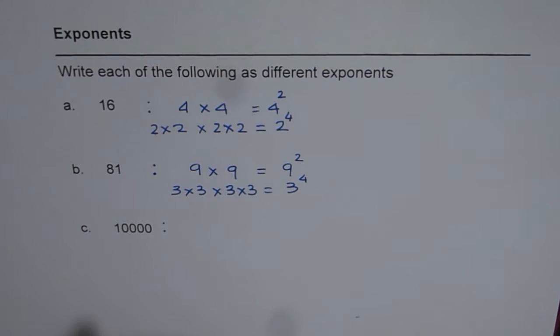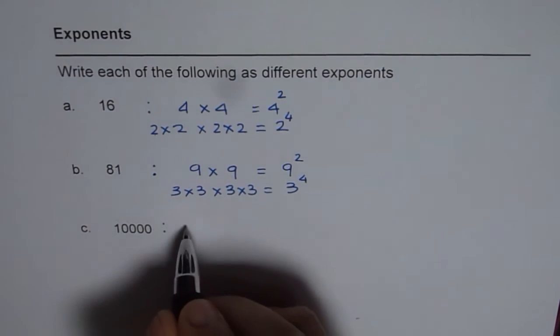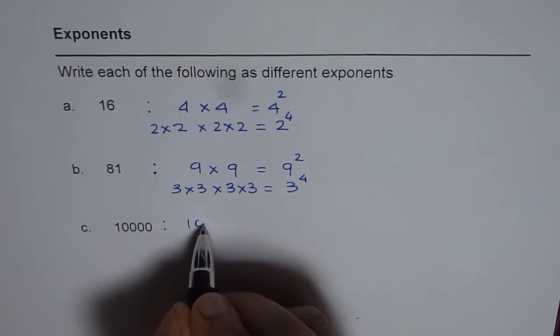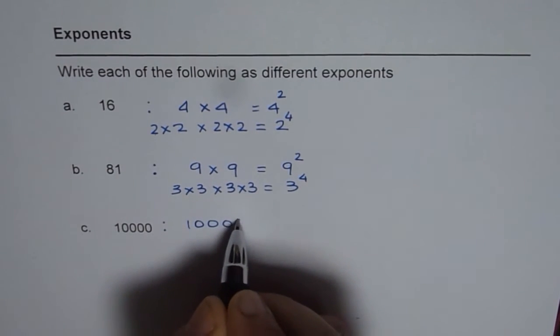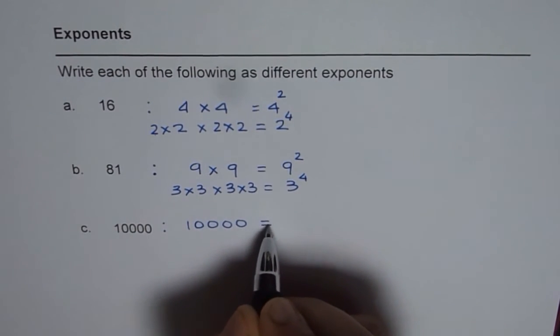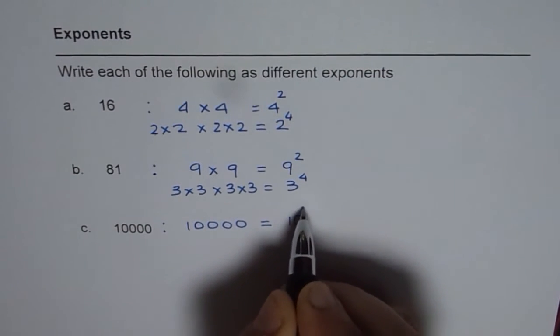Now we have 10,000. So 10,000 has 1, 2, 3, 4 zeros. That means we can write this as 10 to the power of 4.